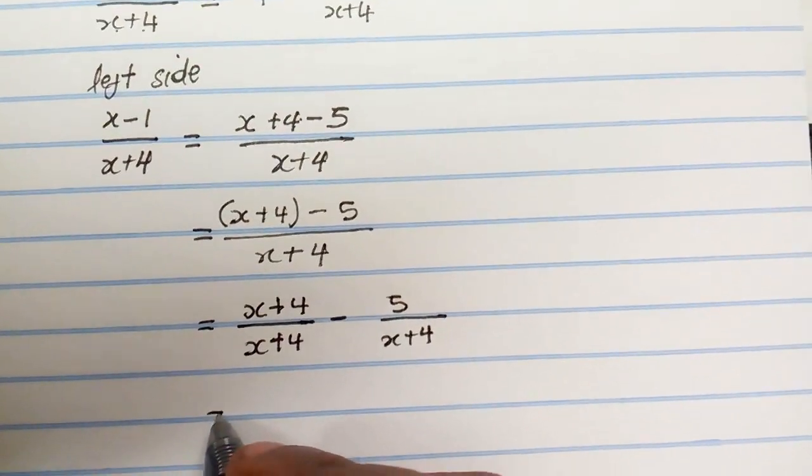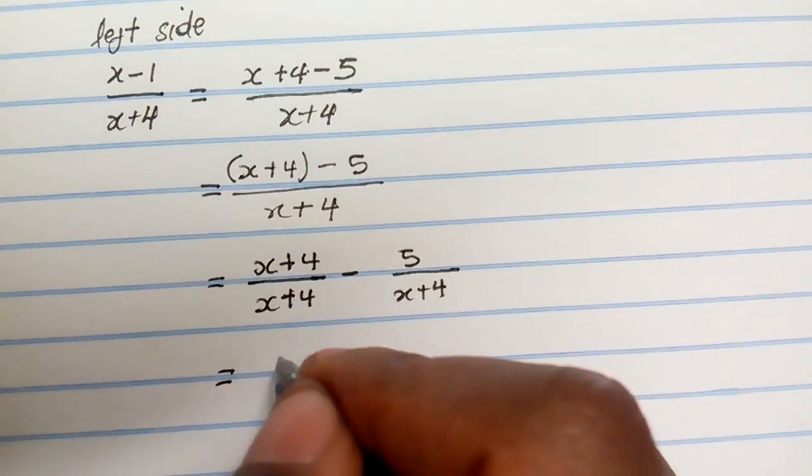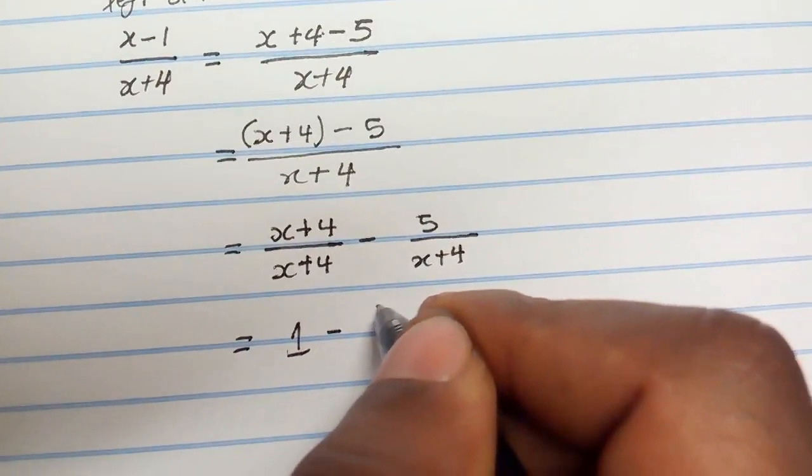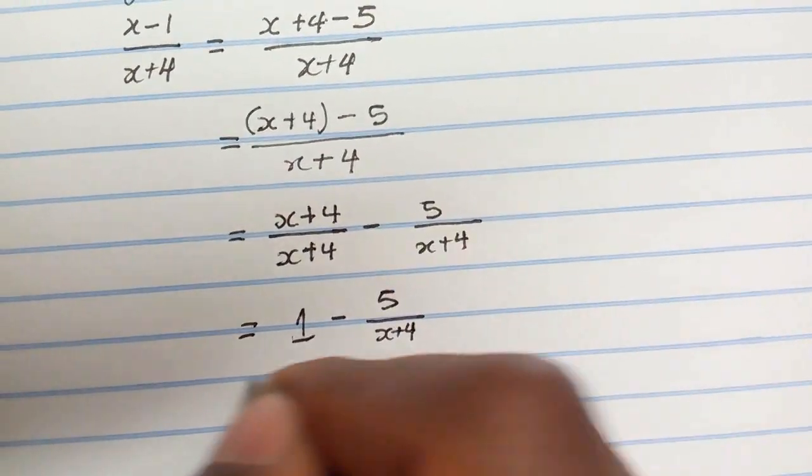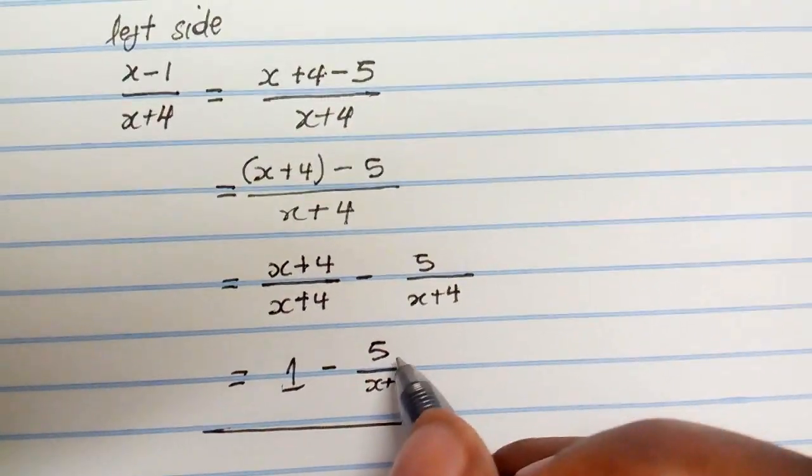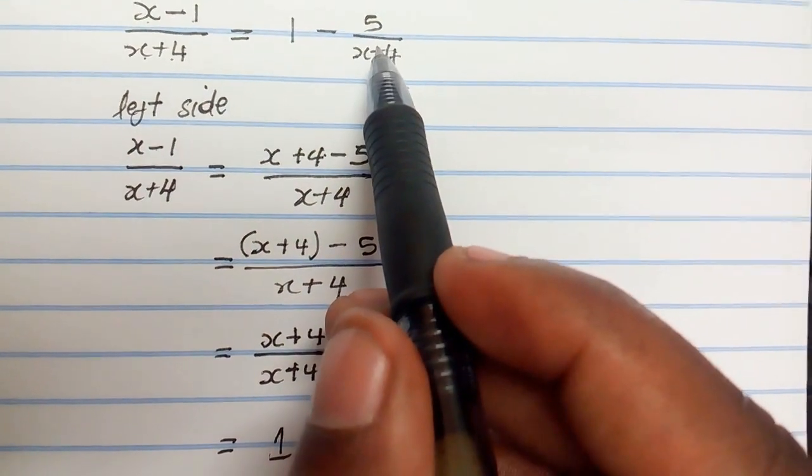So and then when you have this, we know that anything divided by itself is 1 and then minus 5 all over x plus 4. So then you can see that this is the same as what you need to prove out there.